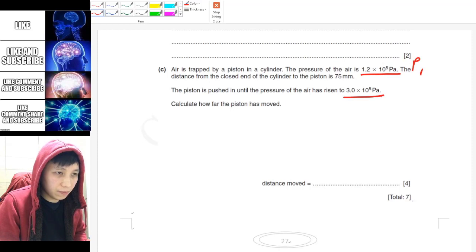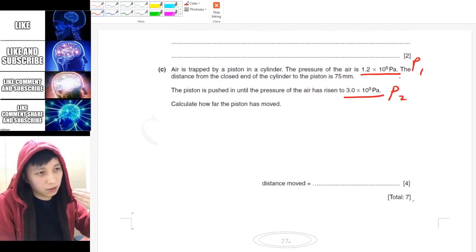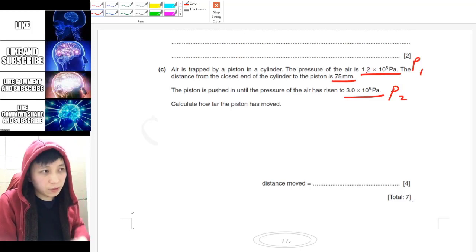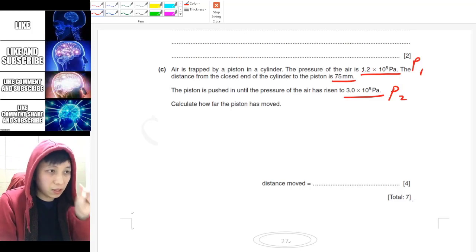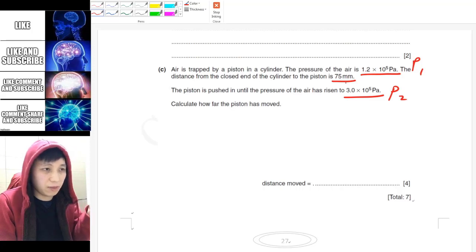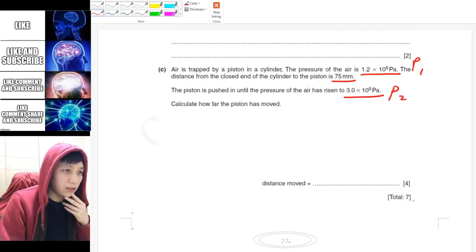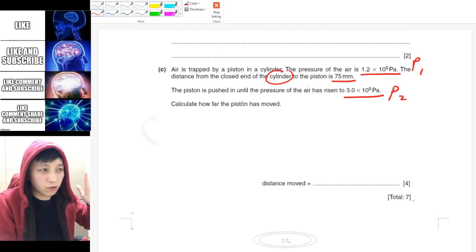So what happened is they have given you P₁ and P₂, initial pressure and final pressure. Instead of giving you volume, they have given you the position—75 millimeters. It's like the length of the space.